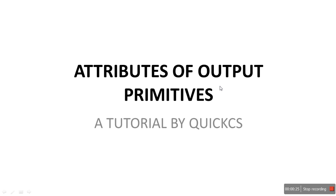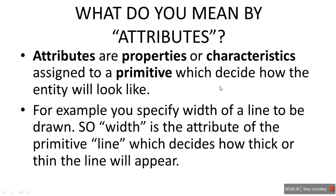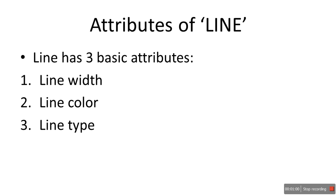So what do you mean by attributes? Attributes are properties or characteristics assigned to a primitive which decide how the entity will look like. For example, if you specify the width of a line to be drawn, width is the attribute of the primitive line. So the width decides how thick or thin the line will appear — that is attributes.